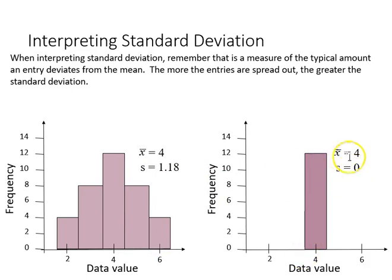If we had a standard deviation of 0, that would mean that everybody's got a 4. Then everybody, if there were 4 cases, all of their scores would be 4.